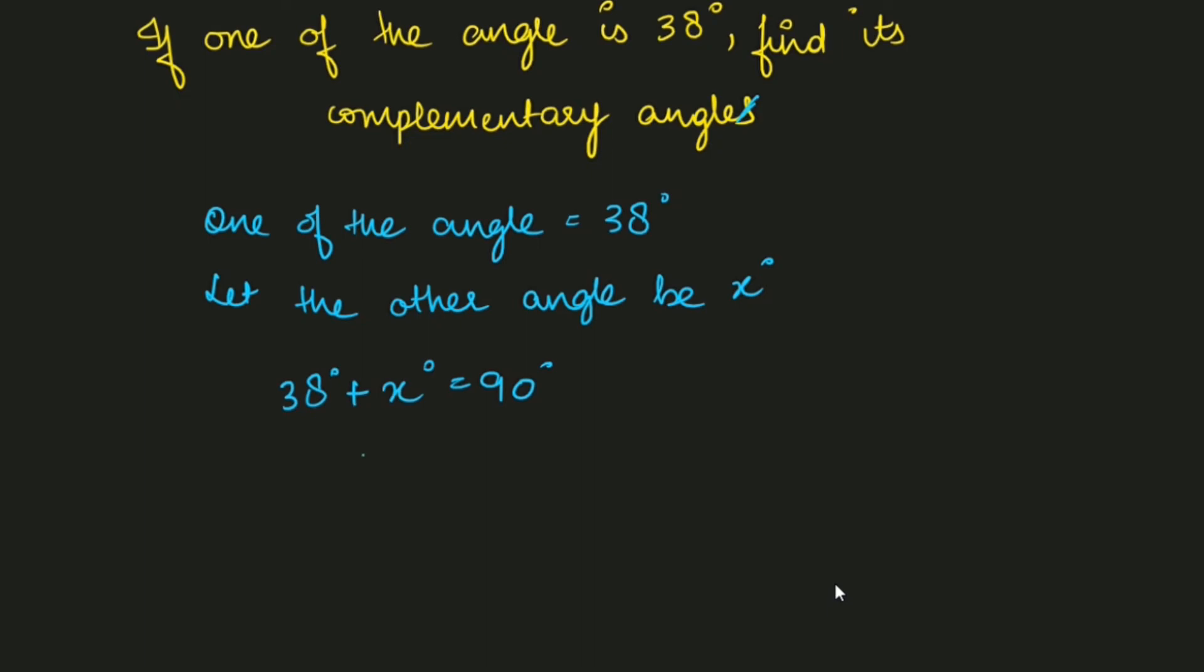Yahaan par aapko x find karna hai, to simply hum kya kareenge: x equals to - ab 90 hai which is a constant, right? Or 38 is also a constant, to hum 38 ko right hand side le jayenge to ye minus 38 ho jayega. So x is equal to 52. So the complementary angle of 38 degrees is 52 degrees.